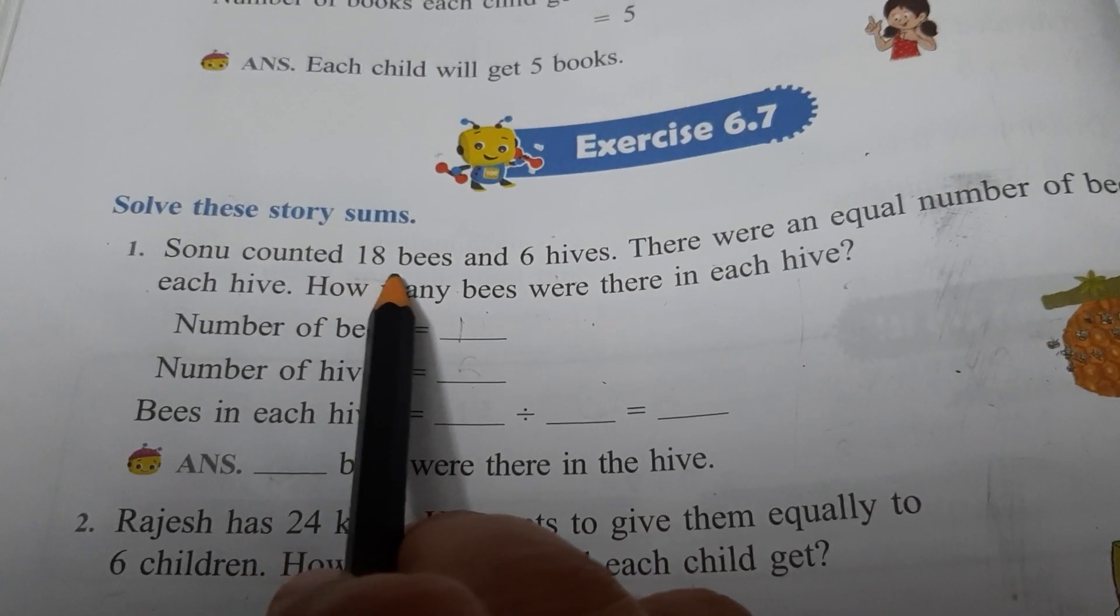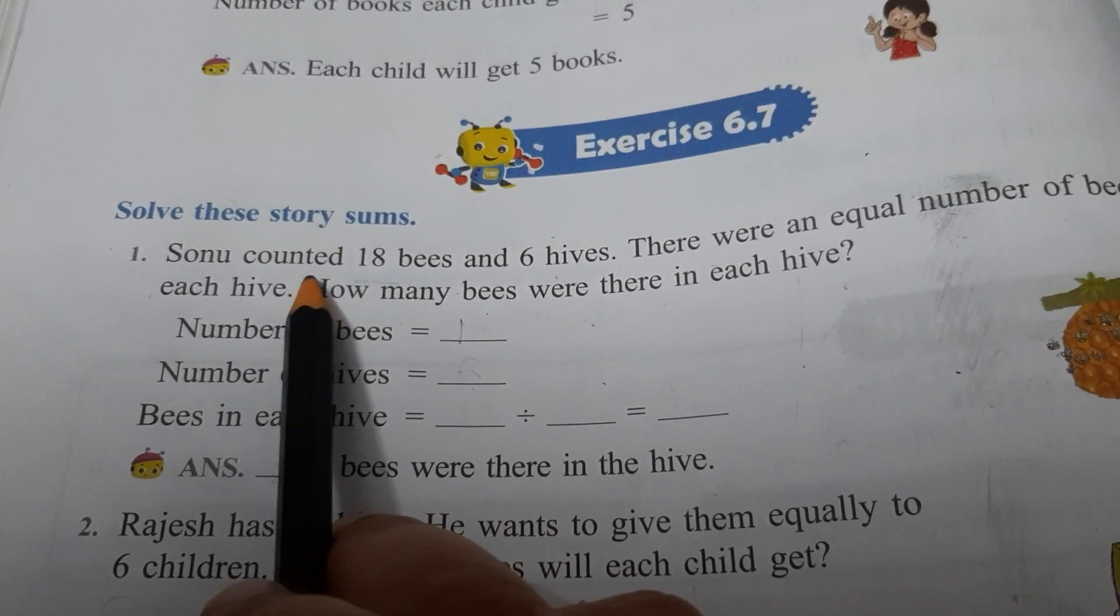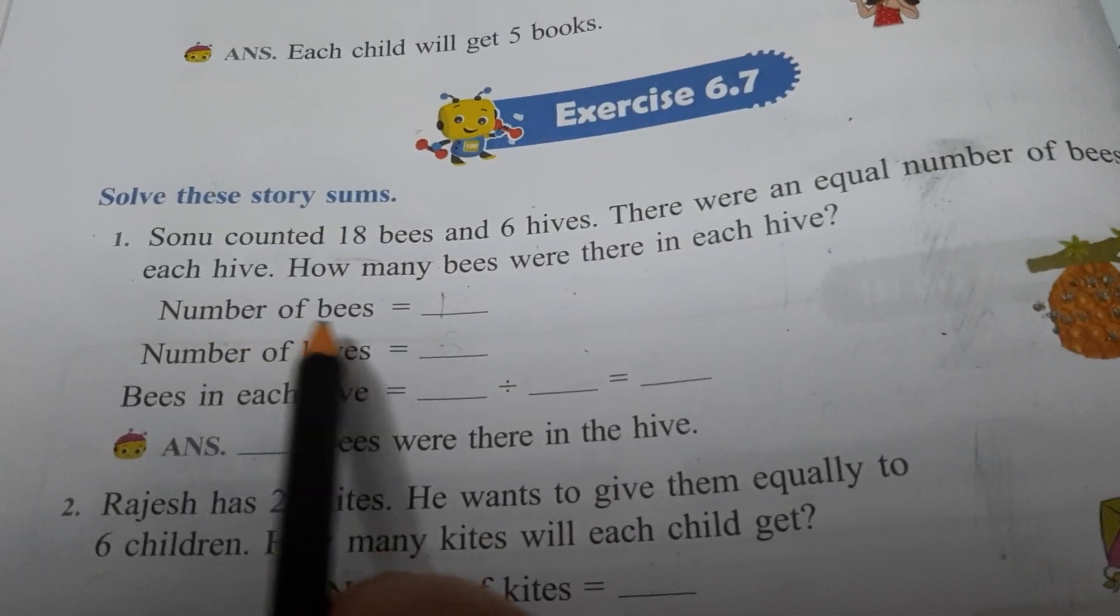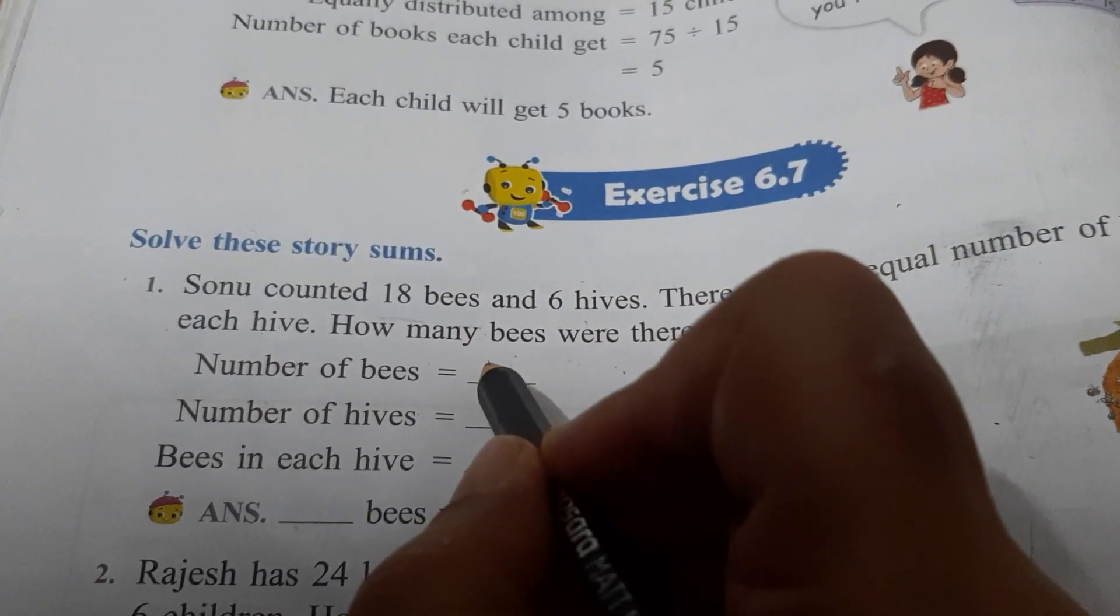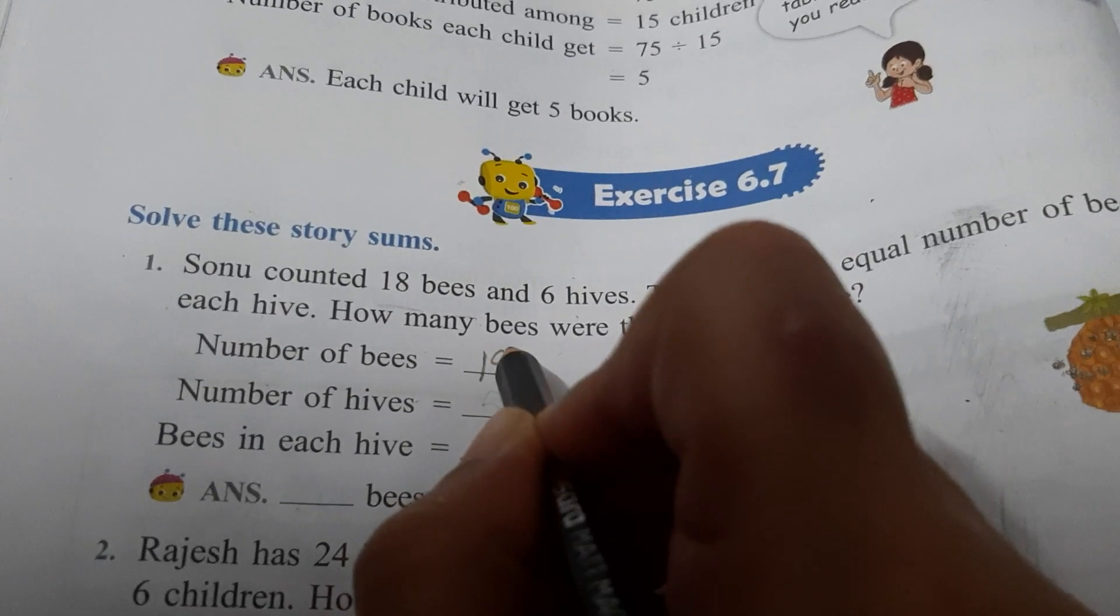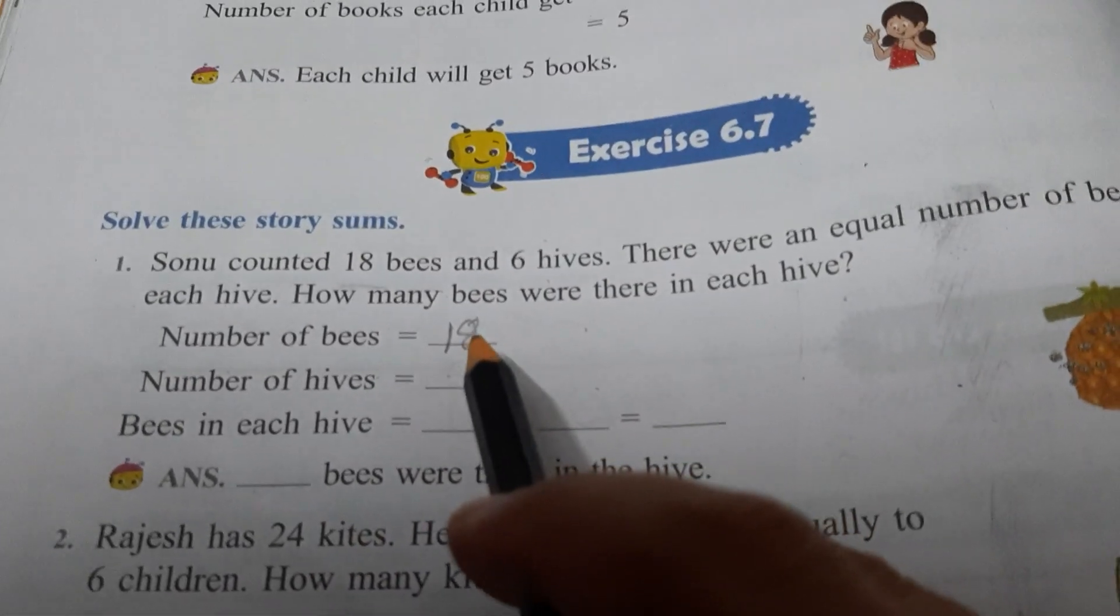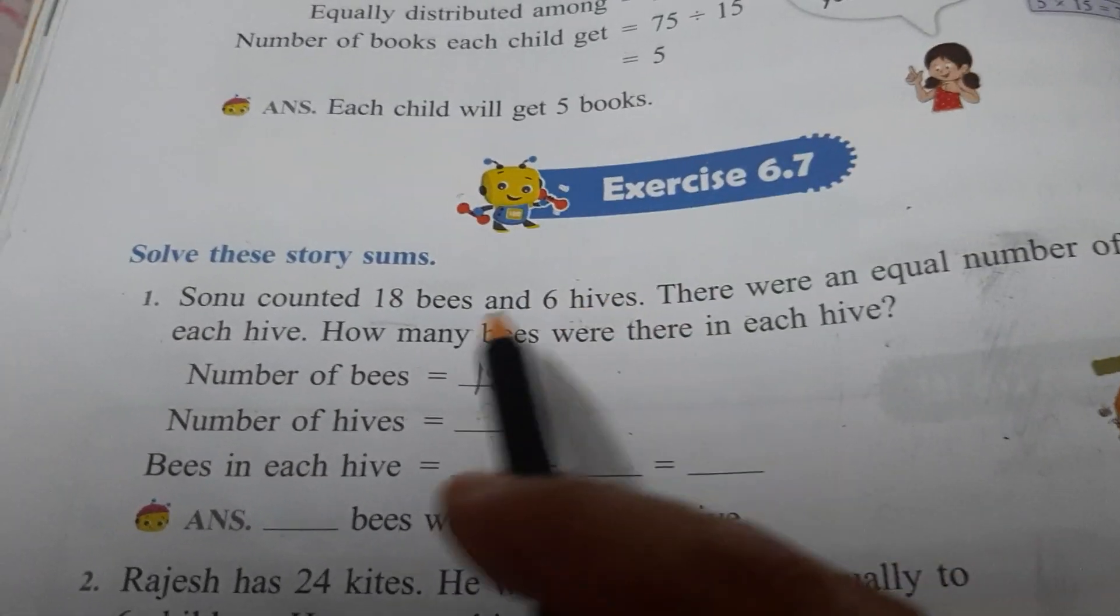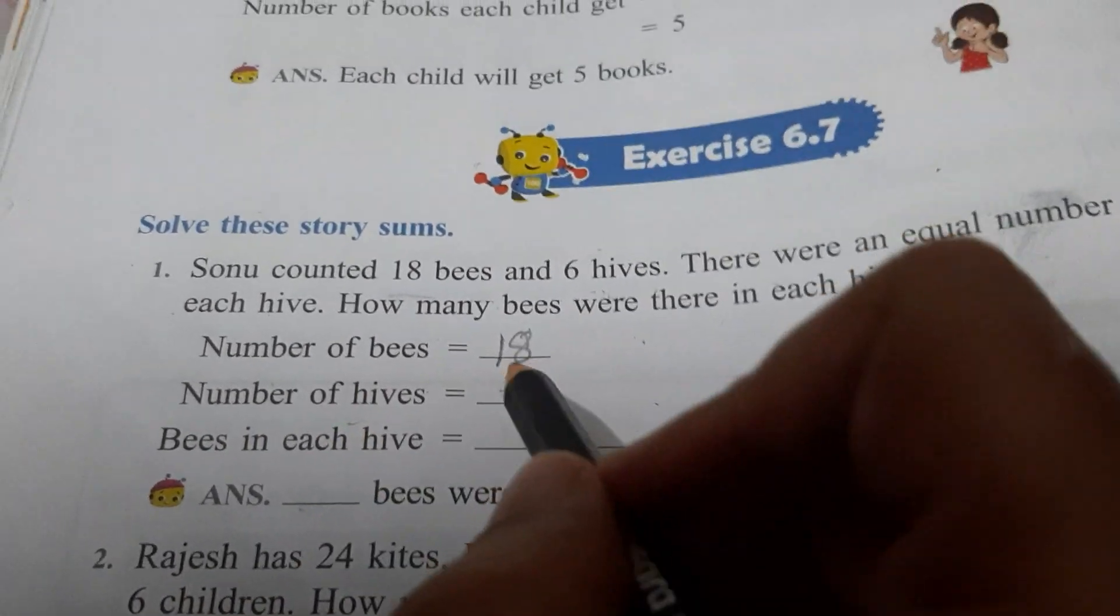So first 18 is given. What is 18? 18 bees. It means number of bees 18. First value we have written. Now second value and 6 hives. It means number of hives 6.